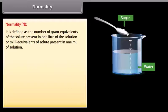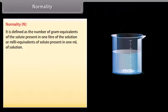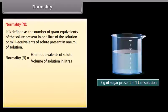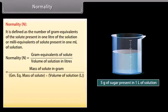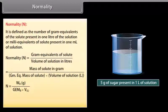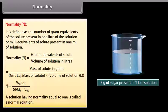Normality is defined as the number of gram equivalents of the solute present in one liter of the solution, or milliequivalents of solute present in one milliliter of solution. It is represented by N. Mathematically, N = WB (in grams) / (gram equivalent mass of B × volume of solution in liters). A solution having normality equal to one is called a normal solution.